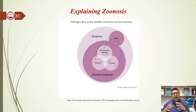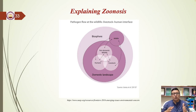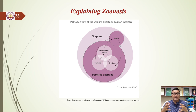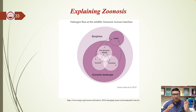A zoonosis is an infectious illness that may be passed from animals to humans. Zoonotic diseases can be bacterial, viral, or parasitic, or they might involve unusual agents, and they can transmit to people by direct contact or through food, drink, or the environment.